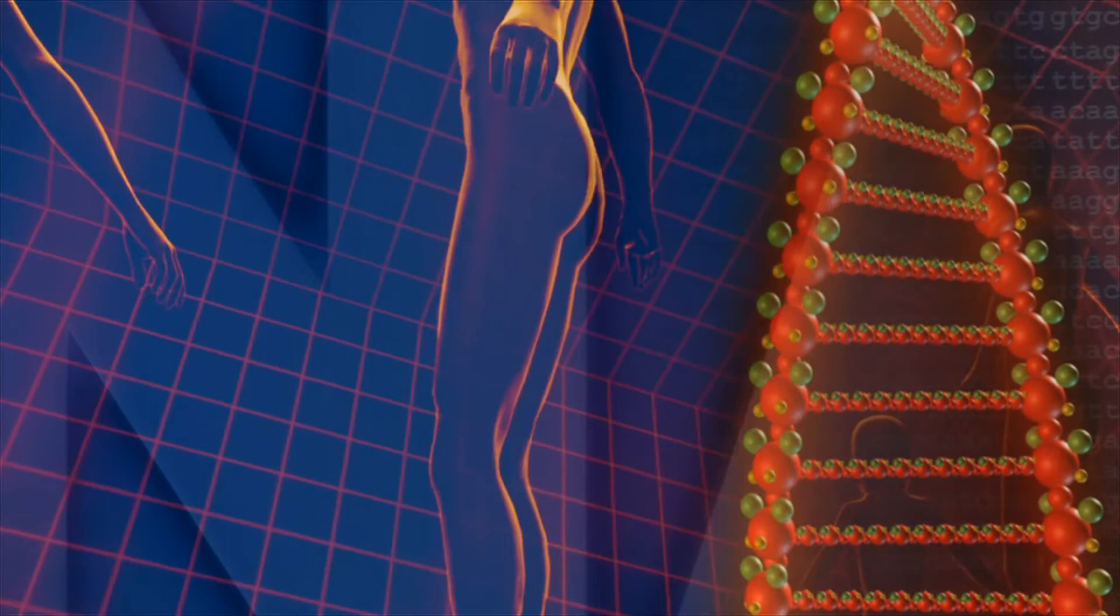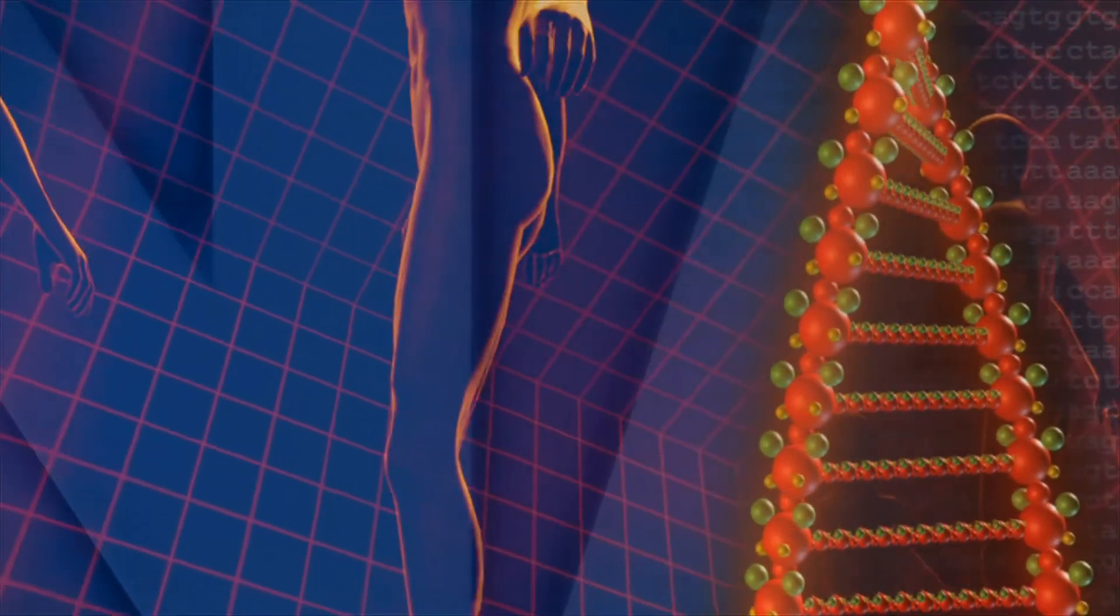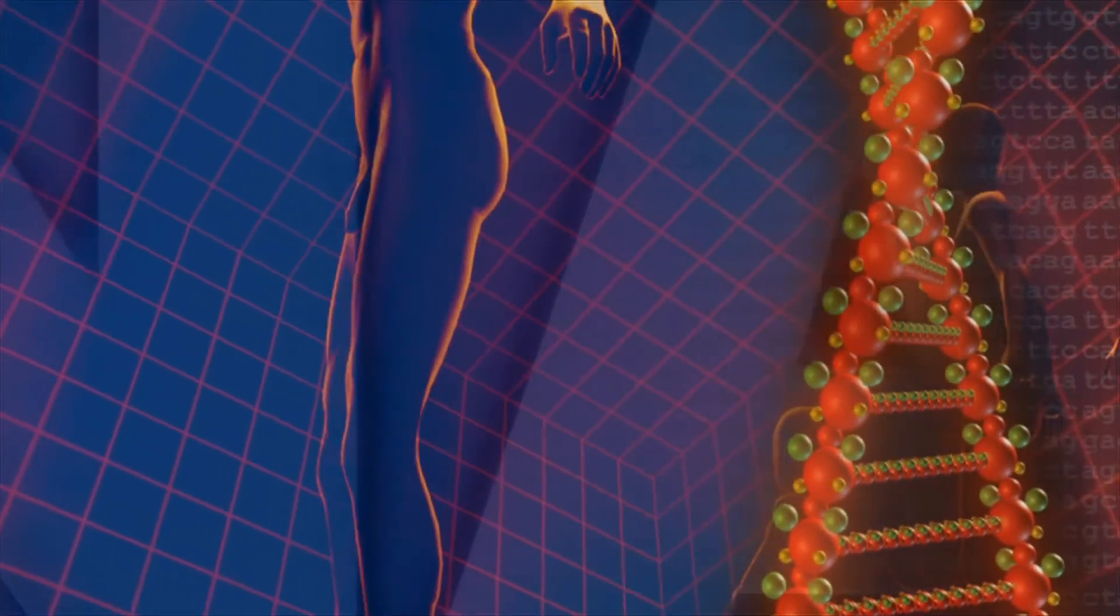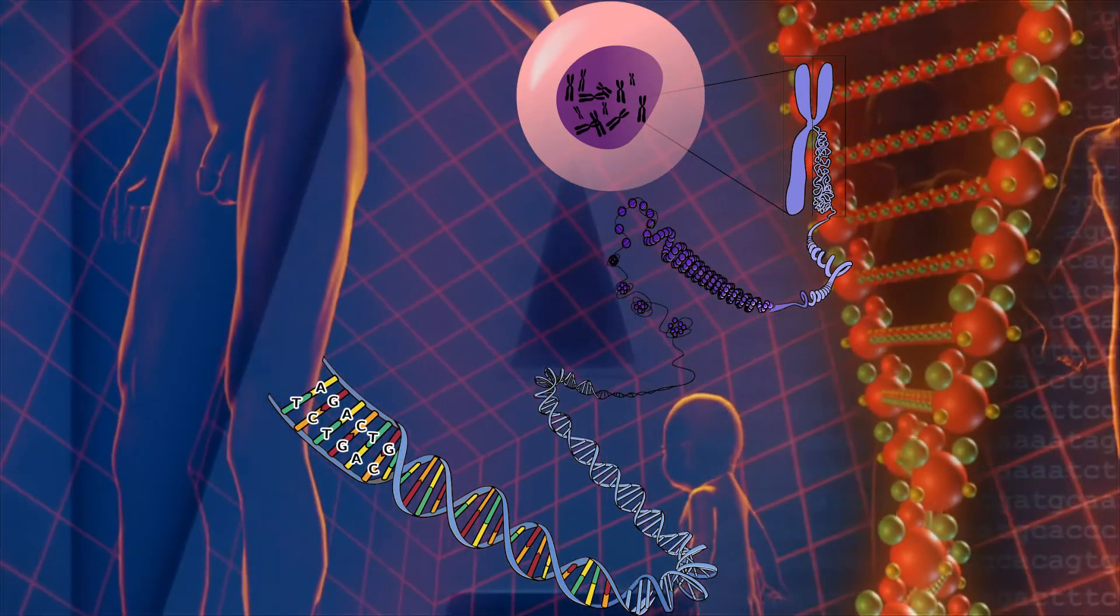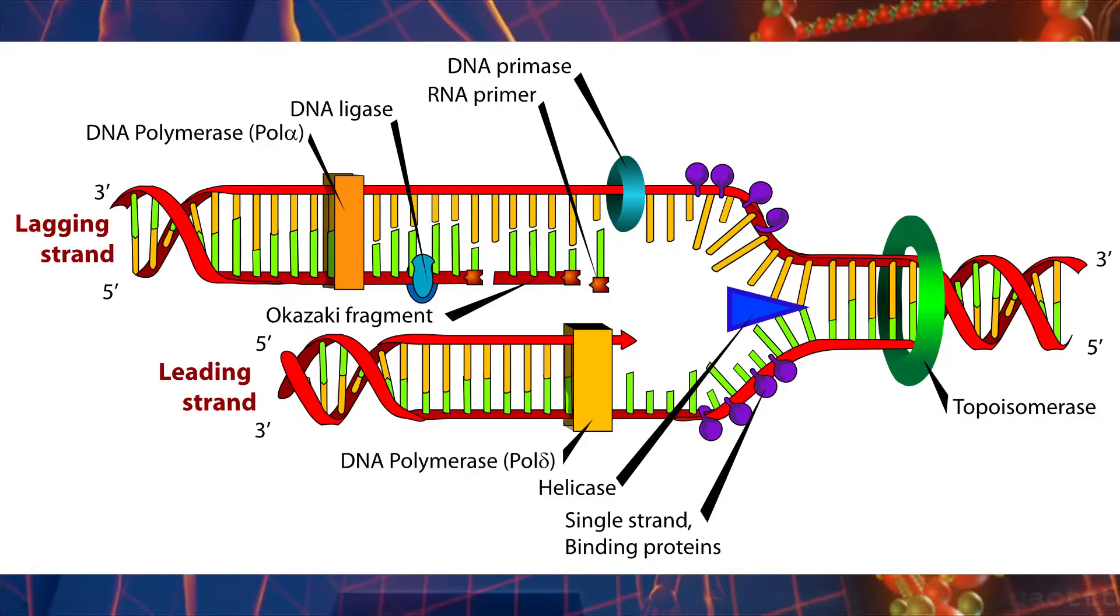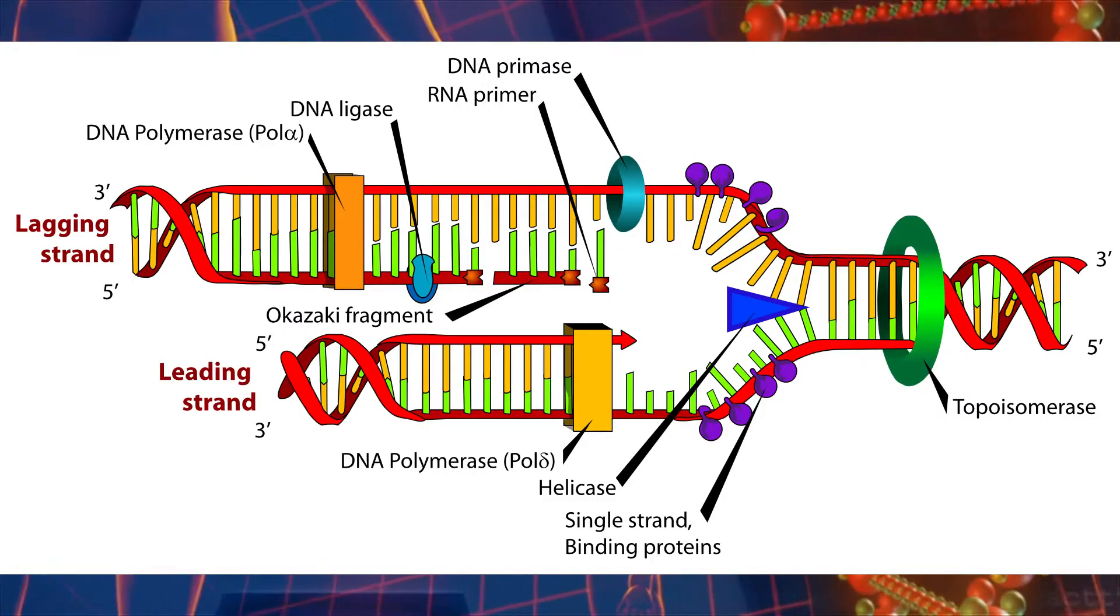The exact process varies slightly, but broadly adheres to the following steps. The DNA in chromatin is unwound from its spool, then the two strands of the helix are split.